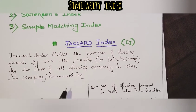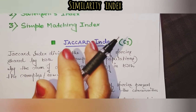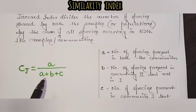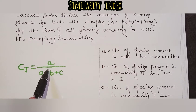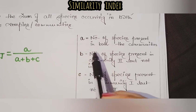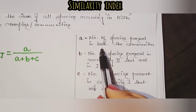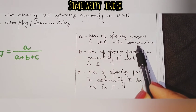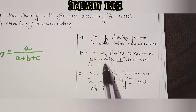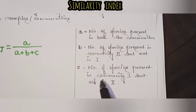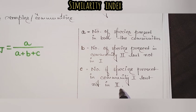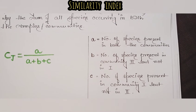All these indices pivot around one factor — they measure similarity between two sets of data. The Jaccard index is indicated as CJ, equal to A divided by A plus B plus C. Here, A denotes the number of species present in both communities, B is the number of species present in community two but not in community one, and C denotes the number of species present in community one but not in community two.